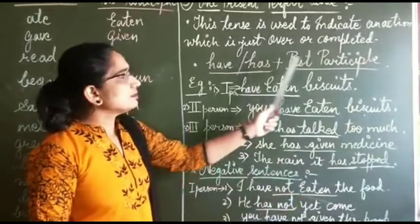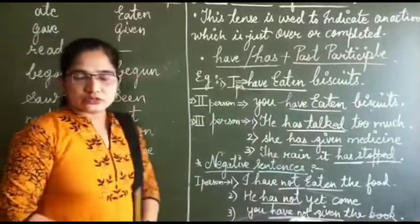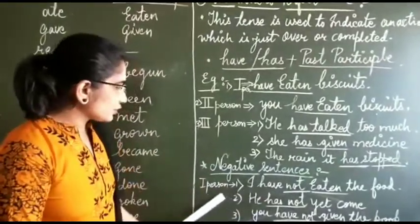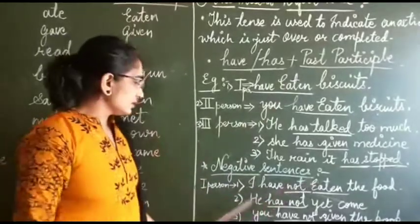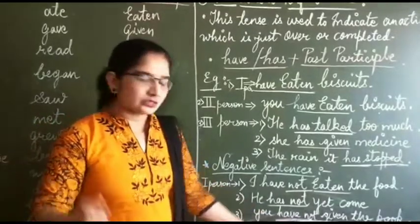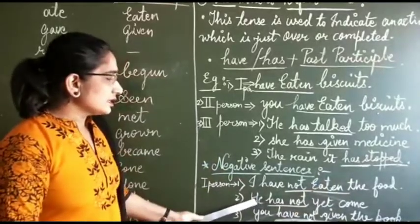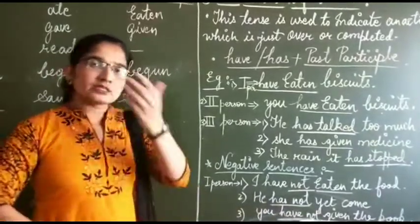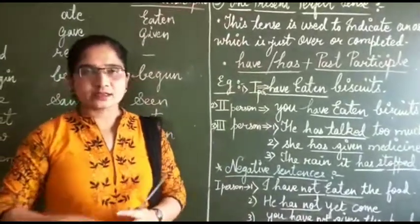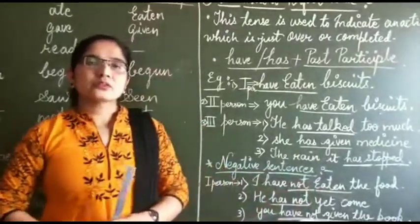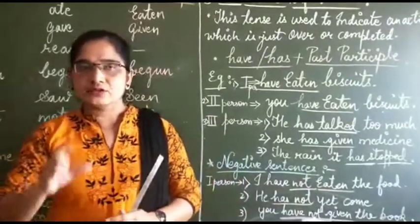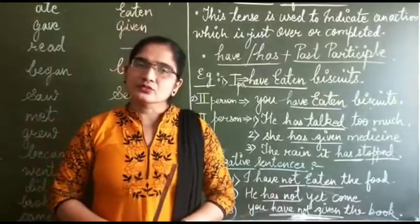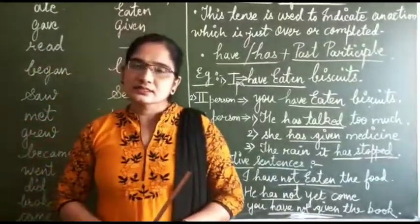Now let us see the sentences. I have not eaten biscuits — that is the negative form for first person. You have not — for second person, 'have' is used. For third person, 'has' is used: he has not come to school. Has he not completed? Like this, question marks come at the end in third person interrogative sentences.